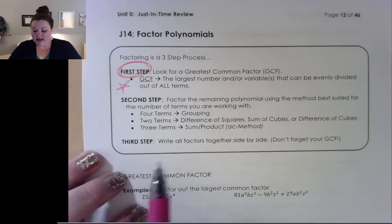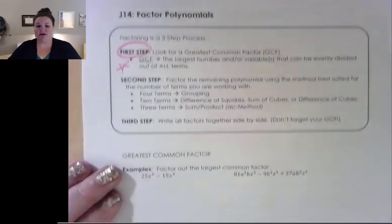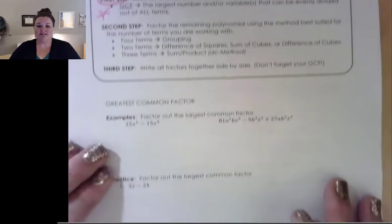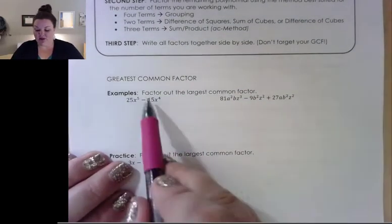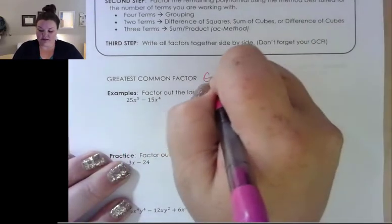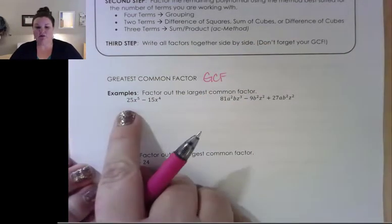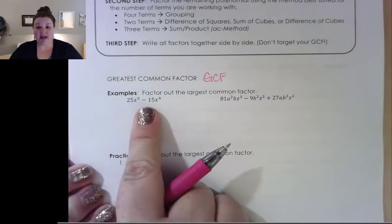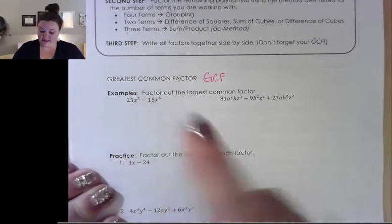If they do, we want to factor that out, or divide that off of each term first. We're going to look at that and then look at four-term factoring. So first, let's look at greatest common factor. Greatest common factor is always our first step when factoring. When it says factor out the largest common factor, I'm looking for — and we abbreviate this GCF — greatest common factor. So I'm looking for: are both terms divisible by something? Do they have letters in common?